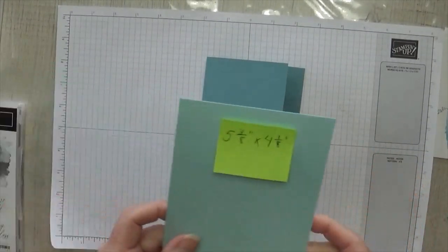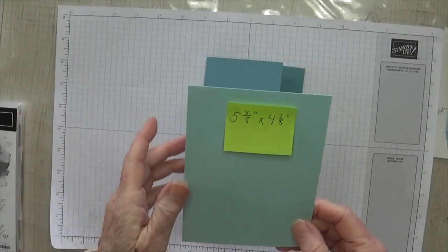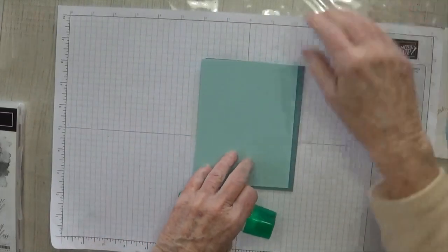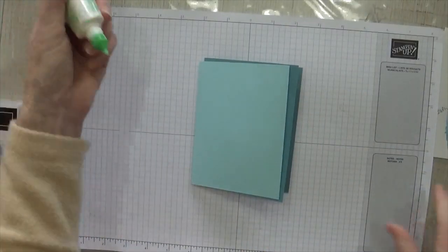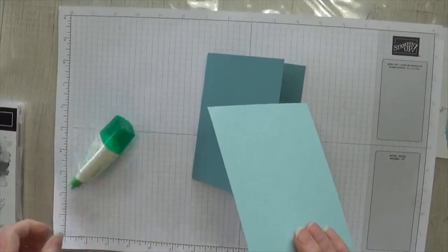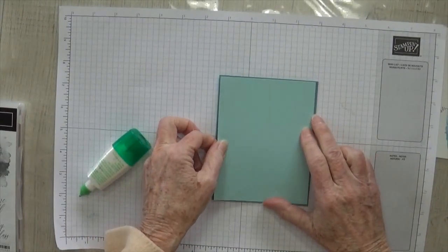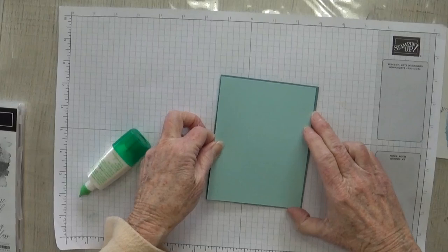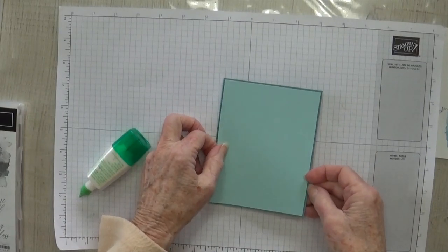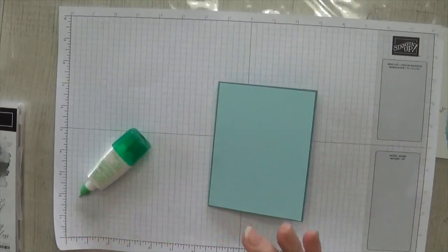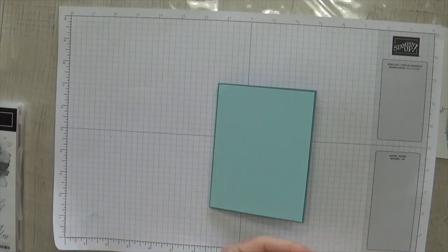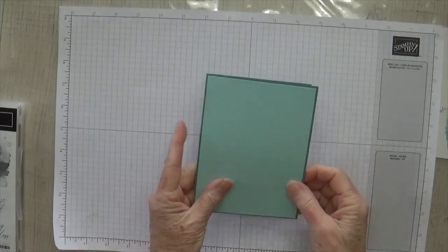My next layer is Pool Party, and it's five and three eighths by four and an eighth. I wanted just a small border around the edge of that. I didn't go with my five and four and a fourth because that's what my next layer is. So let's go ahead and pop this on. This stamp set was really fun to use in class. I was a little reluctant at first that it might be tricky and hard to use, but we managed to get it under control and everybody's cards turned out really great. Okay, there we go. So here's our base and our first layer.